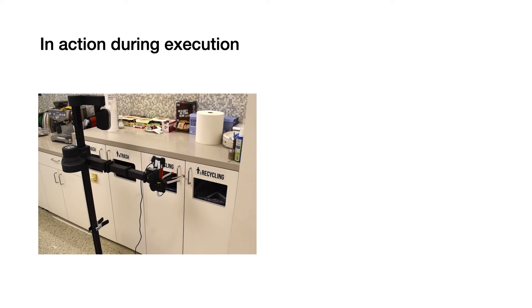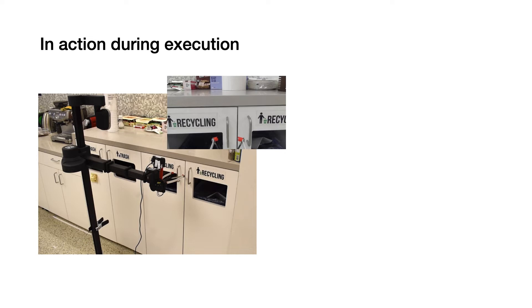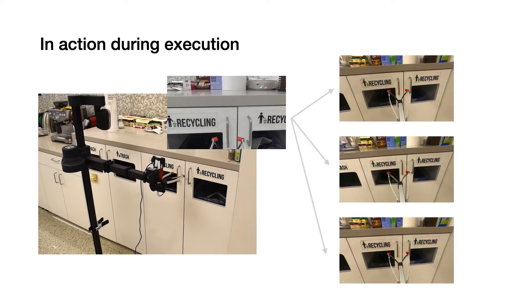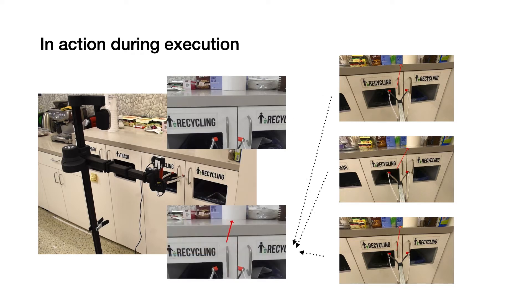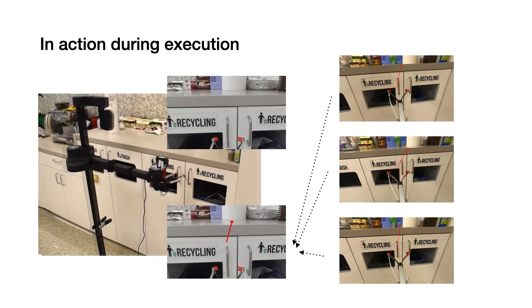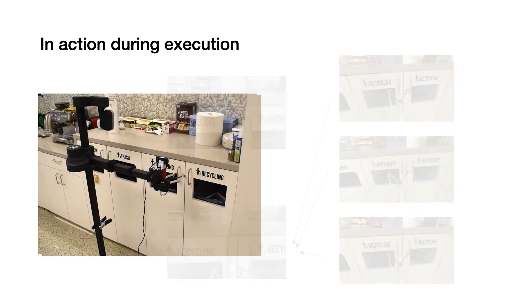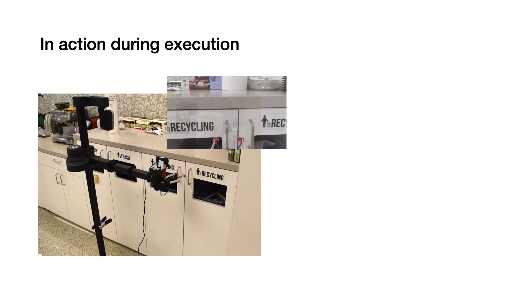Let's see how this model works during execution time. During execution, the robot takes an observation from the camera attached to its wrist. Then, using the representation from the observation, the model finds similar observations in our training dataset. We take the associated actions from those observations and perform locally weighted regression to find the robot action. We execute this action on the robot to reach a new state, then repeat the same process until we are done.